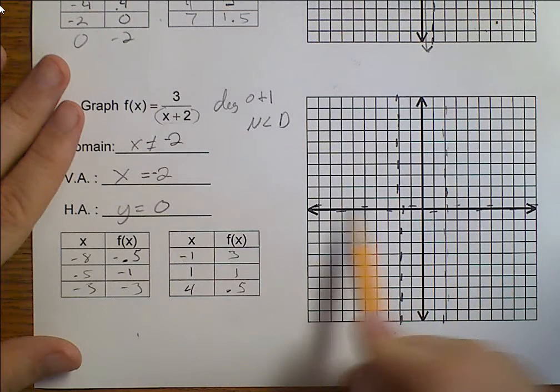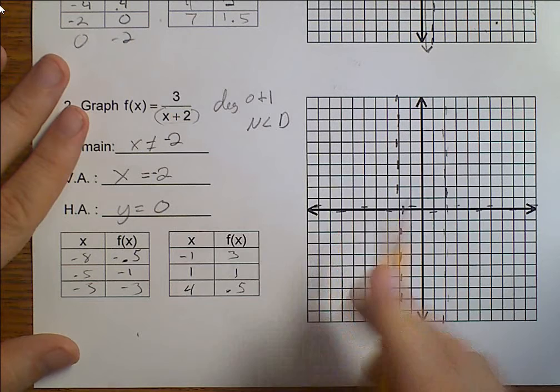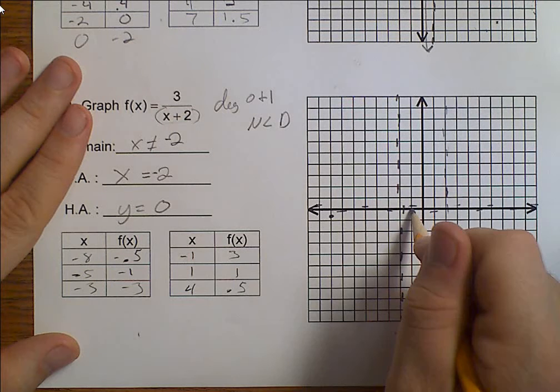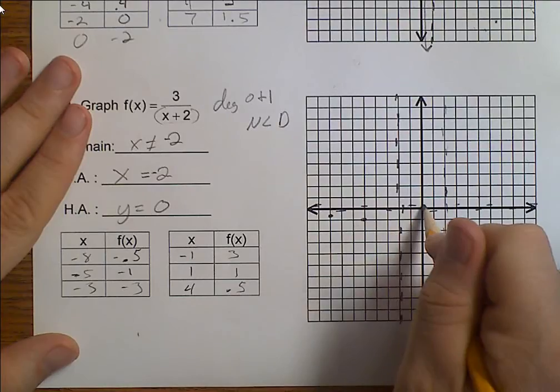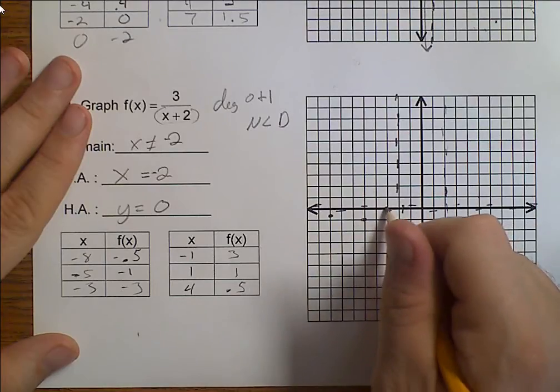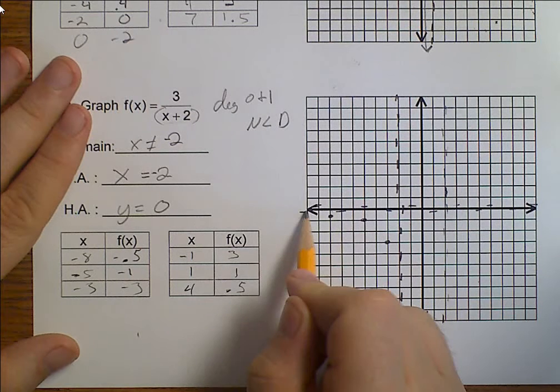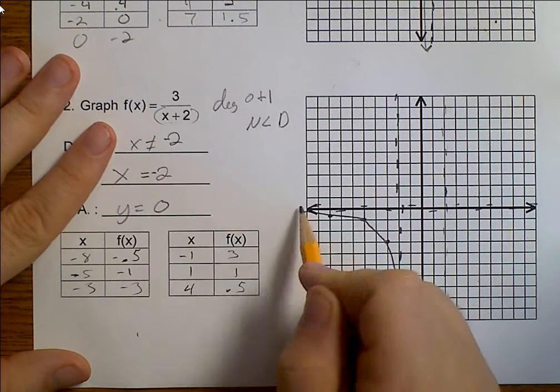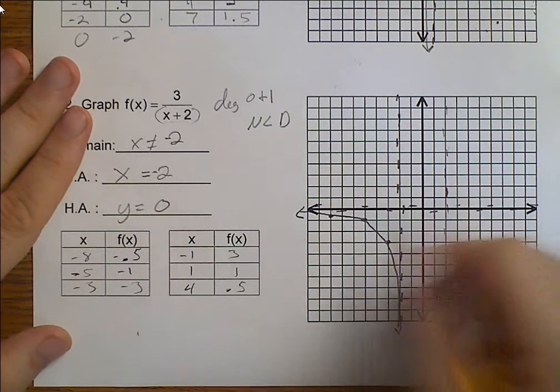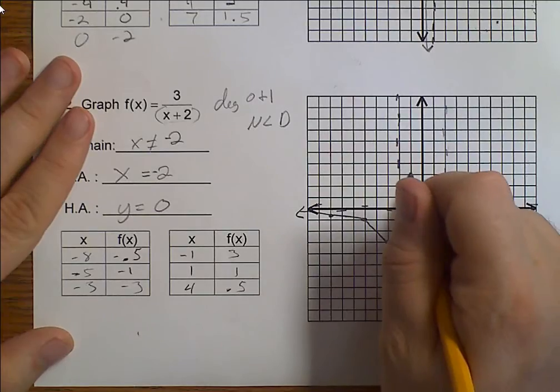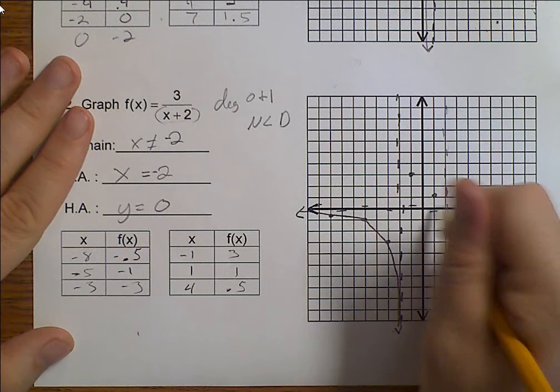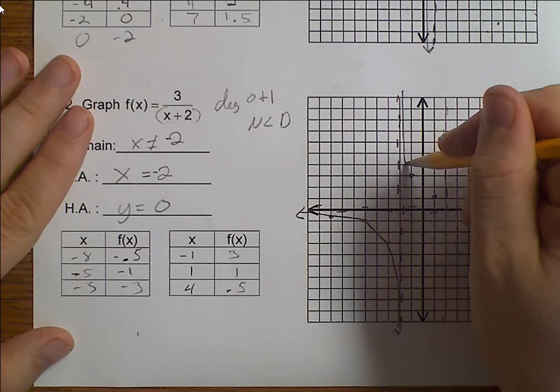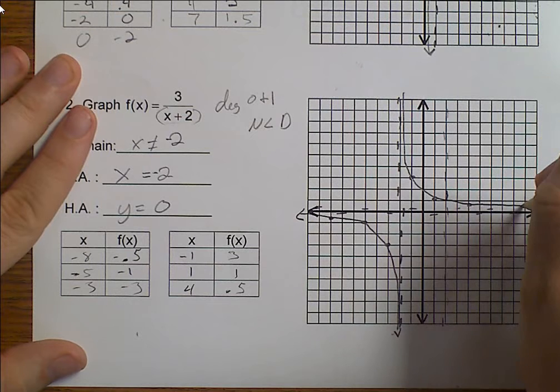When I were to graph the negative 8, that's all the way over here at negative 0.5. So just below the line. Negative 5 at negative 1. Negative 3 at negative 3. So we hug our asymptote, go through our points, and then hug our asymptote. Over here, negative 1, 3. Positive 1, 1. And 4, 0.5. So we hug our asymptote, swing out to hit our points, and then hug our asymptote.